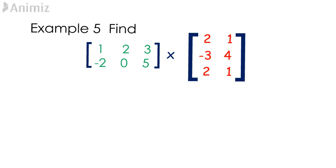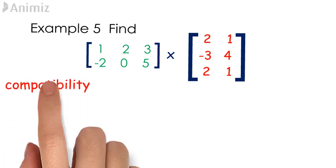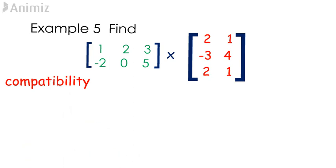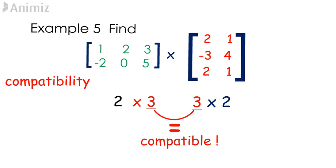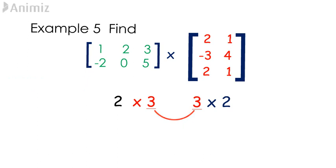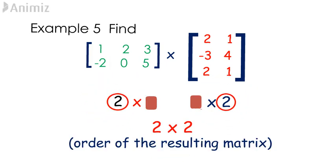Before going any further, we need to check the compatibility of the two given matrices. The first matrix is of the order 2 by 3, whereas the second matrix is of the order 3 by 2. Since the number of columns in the first matrix is equivalent to the number of rows in the second matrix, the two matrices are deemed to be compatible and the multiplication process can be carried out. We are multiplying a 2 by 3 matrix with a 3 by 2. Cancelling the recurring 3 gives us 2 by 2, which will be the order of the resulting matrix.